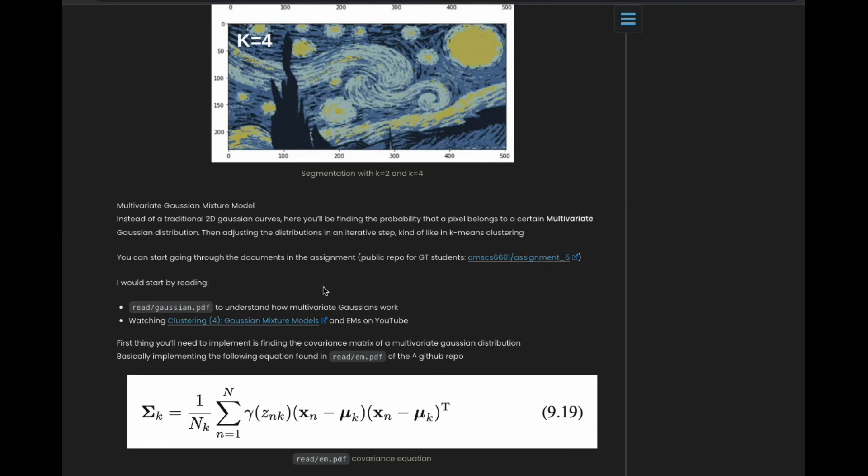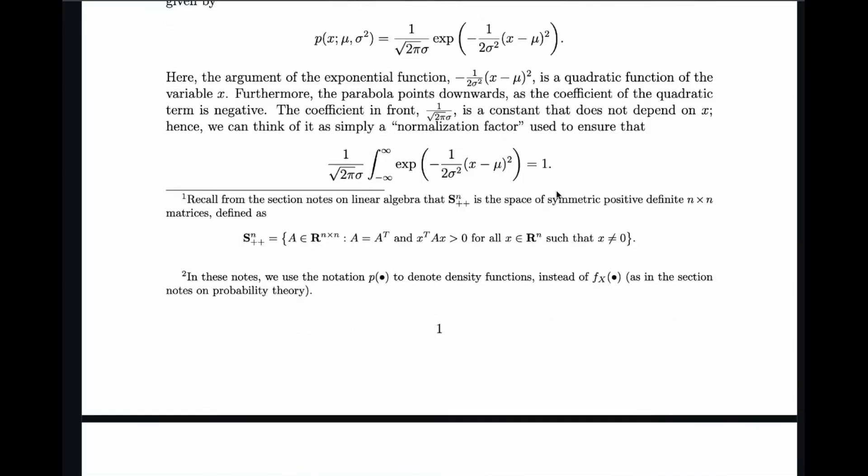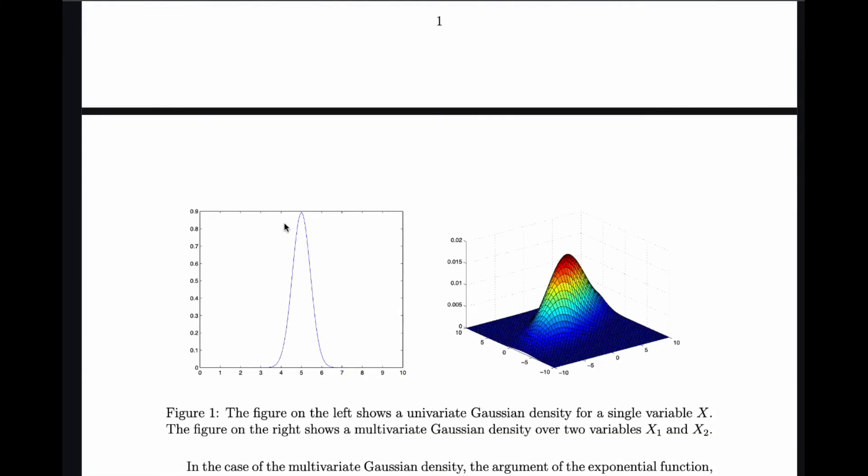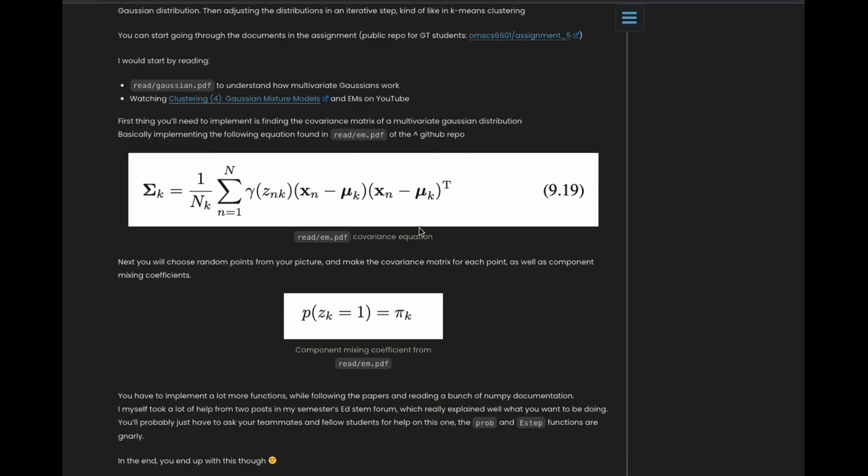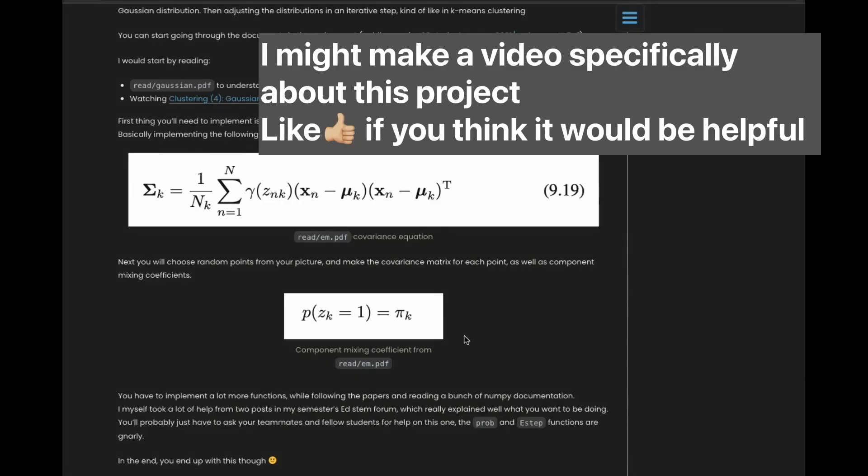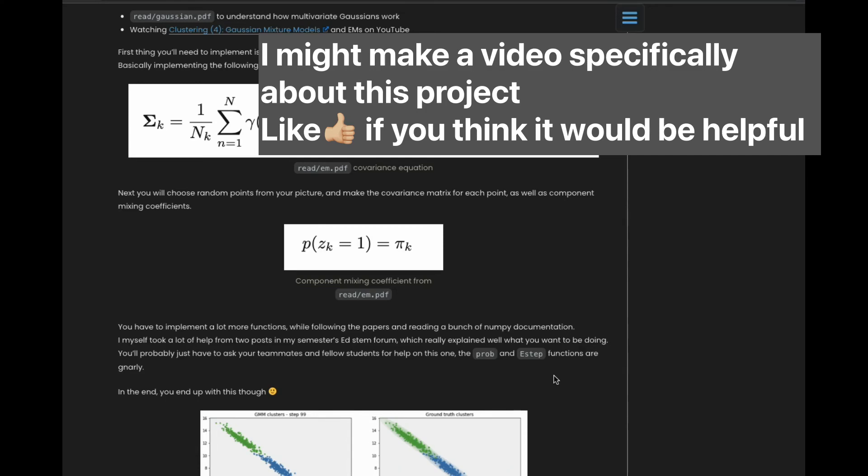The next part is the toughest part: multivariate Gaussian mixture models. So this is the public repo. Multivariate Gaussians, first of all, are just like Gaussians, for example in 2D here's a Gaussian curve, but in multiple variables, so multiple dimensions. Here's the multivariate Gaussian on the right-hand side. You're going to be coding up the equations to make covariance matrices for the Gaussian. Another thing, component mixing coefficient. It's kind of tricky. You want to definitely take some time beforehand to understand the equations before you try to code it.